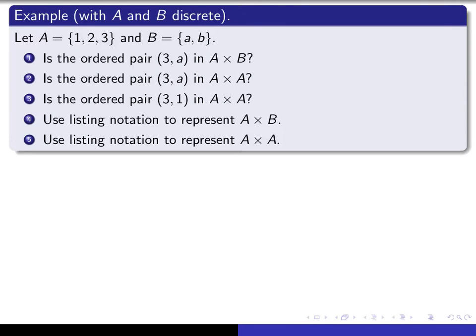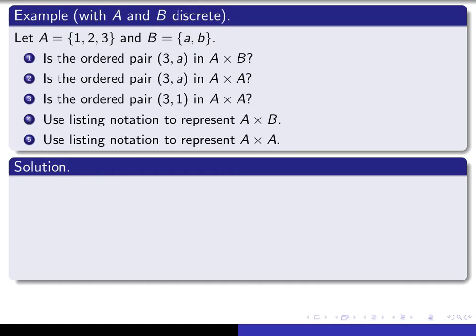So let's do an example of a Cartesian product in which A and B are discrete sets. So we'll take A to be the set having elements 1, 2, and 3, and B the set having elements a and b, and then we ask you these five questions. So put your video on pause and see if you can answer these five questions. Okay, so here are my answers to these questions.